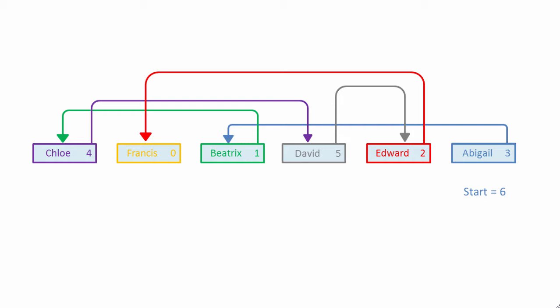Here's our linked list. At the start of the list, we have item 6, Abigail, and Abigail points to item 3, Beatrix. Beatrix points to item 1, Chloe, and Chloe points to item 4, David.